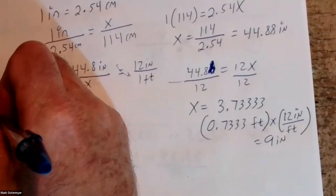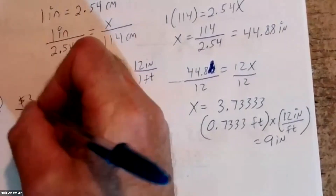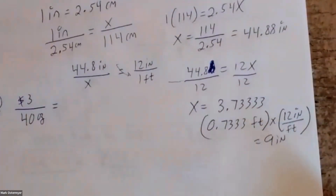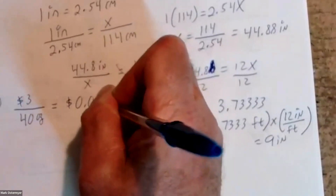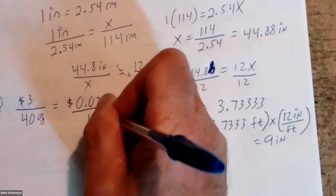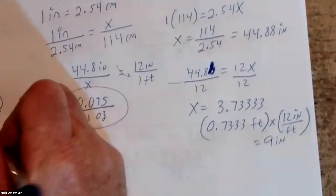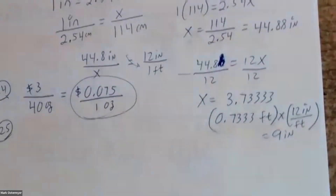Number twenty-four: what is the unit cost of a forty-ounce bottle of shampoo that costs three dollars? It's three dollars per forty ounces — we just divide three by forty. Three divided by forty gives a unit cost of 0.075 per one ounce — that's about eight cents per ounce.